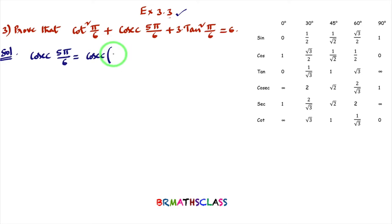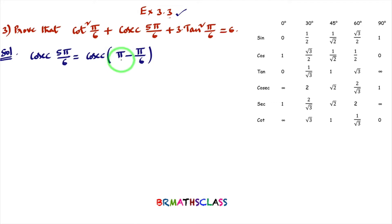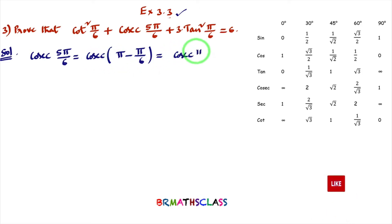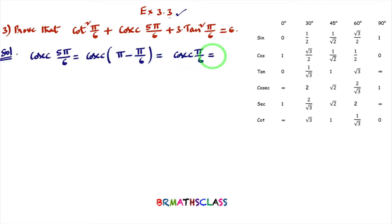To calculate cosec(5π/6), we use the trick: write π − π/6. Simplifying, 6π − π = 5π/6, so 5π/6 = π − π/6. Since π is present, the function remains the same — cosec. The form π − θ lies in the second quadrant, where cosec is positive. So cosec(π − θ) = +cosec θ, giving cosec(5π/6) = cosec 30° = 2.